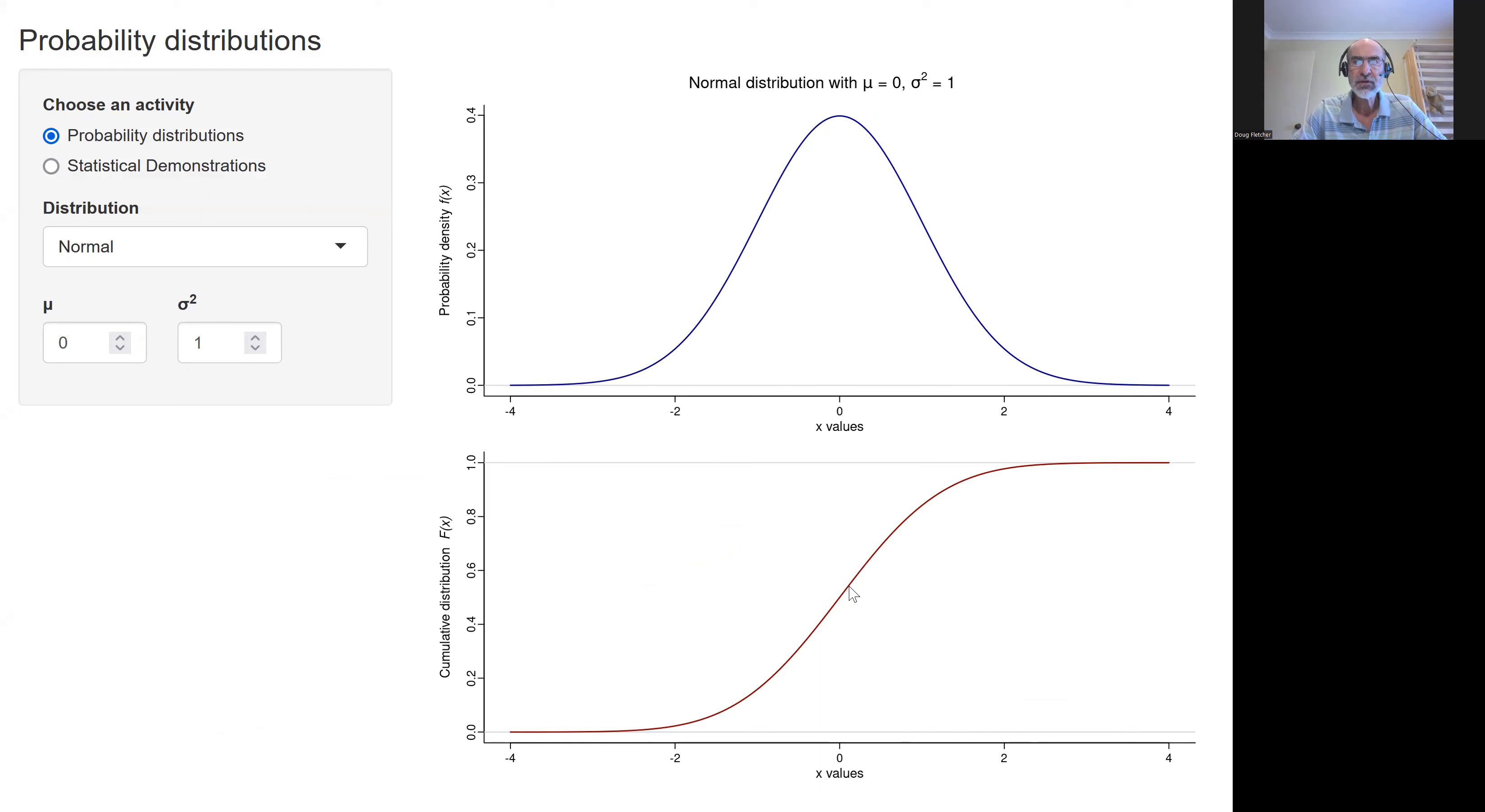The cumulative distribution function gives you the probability of getting a value up to and including some x value. If we say up to and including zero, what's the chance of getting something in that range? We read across onto the vertical axis and the value is exactly a half. This makes sense because for a standard normal variable, exactly half the distribution is below zero and half is above zero.